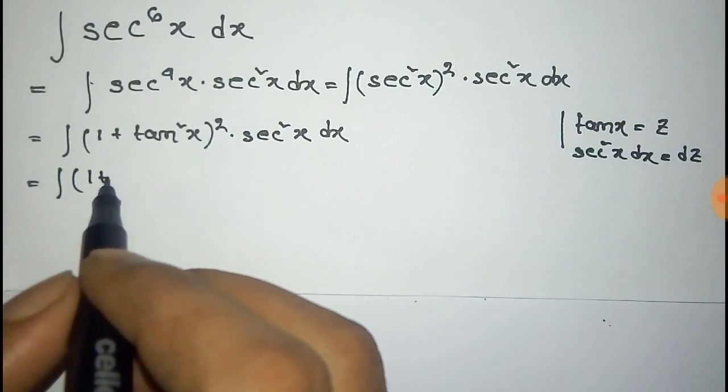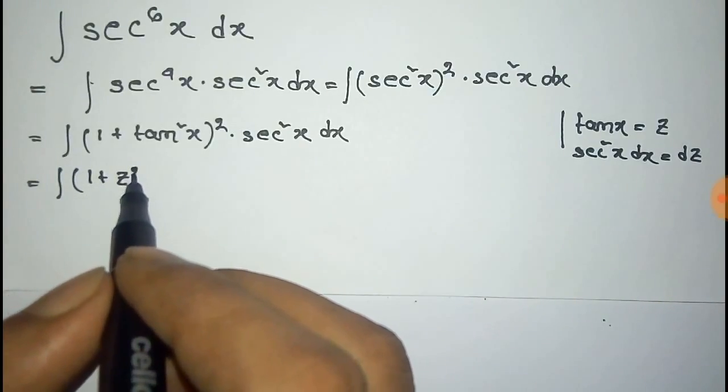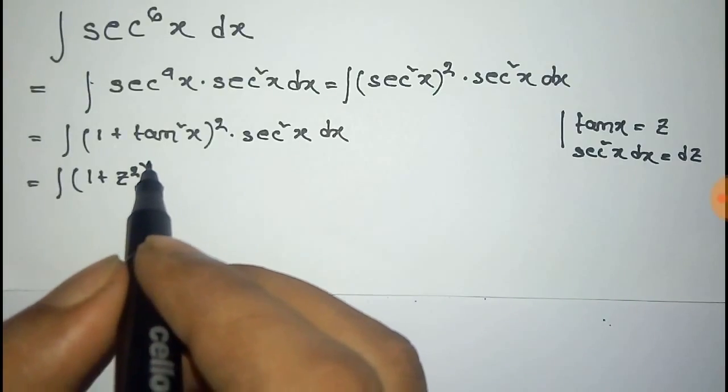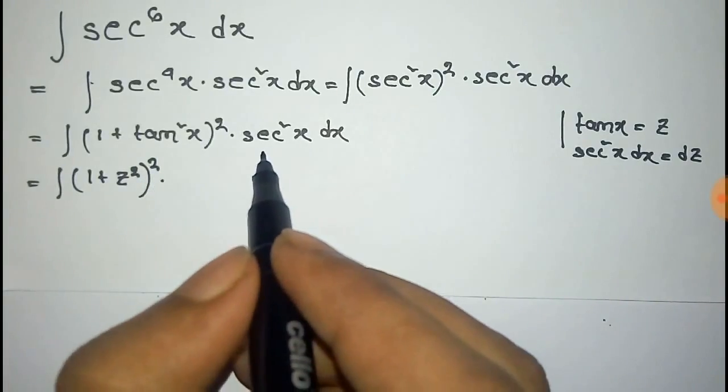So it will be 1 plus z^2 total whole square into dz.